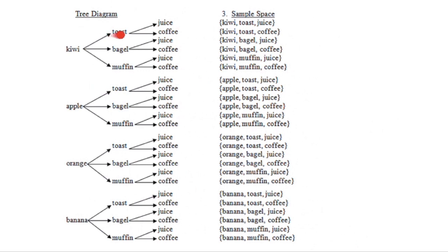By following the arrows on our tree diagram — it's kind of like choose your own adventure — we can see that we end up with six different possible breakfasts with the kiwifruit, six different choices for the apple, six different ones for the orange, and six different ones for the banana. So altogether, if we count how many different menus we can create, we get six plus six plus six plus six — 24 different menus in total.